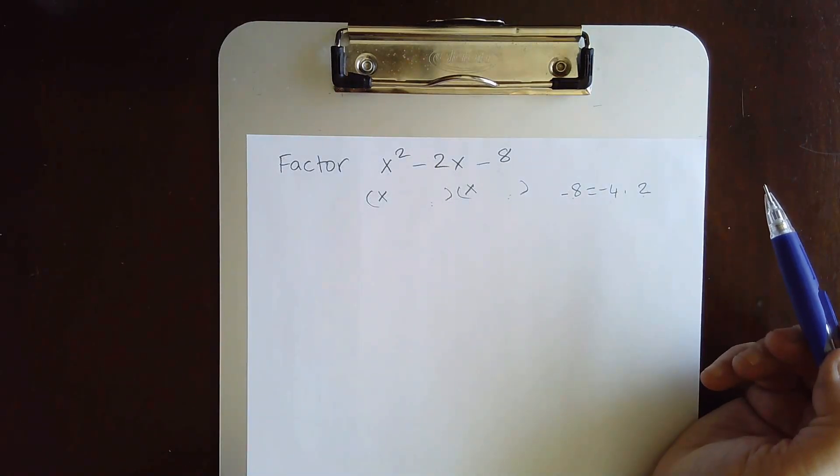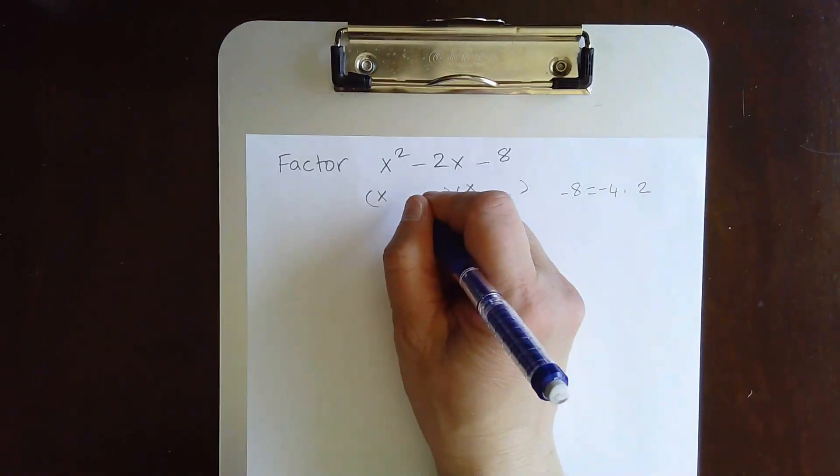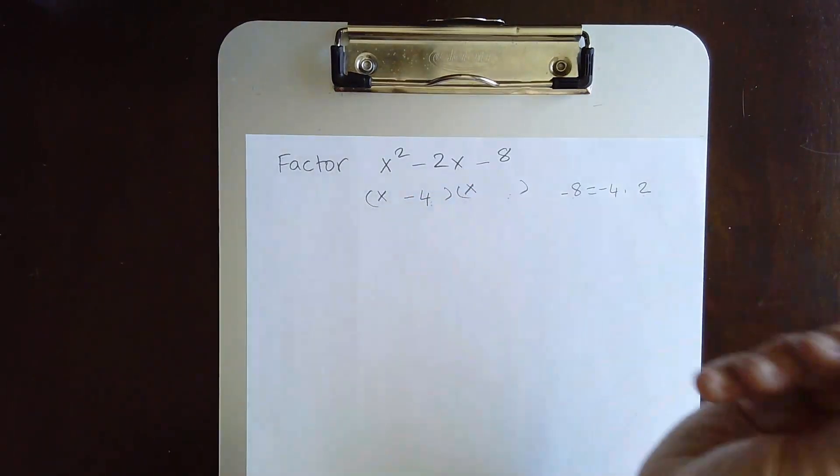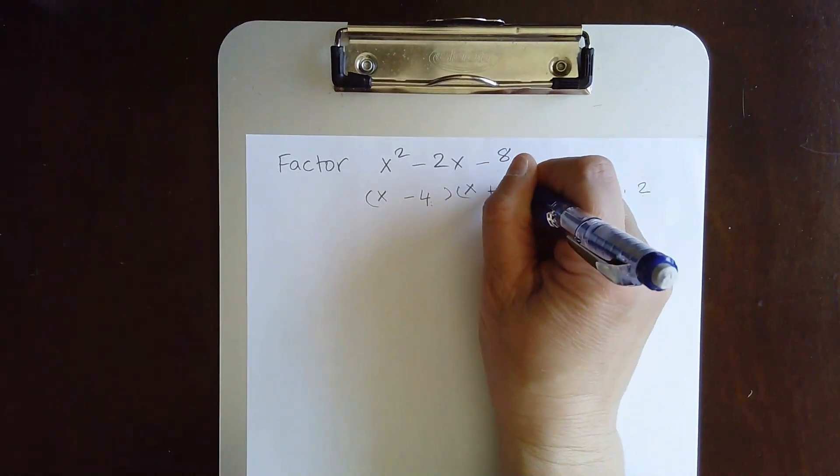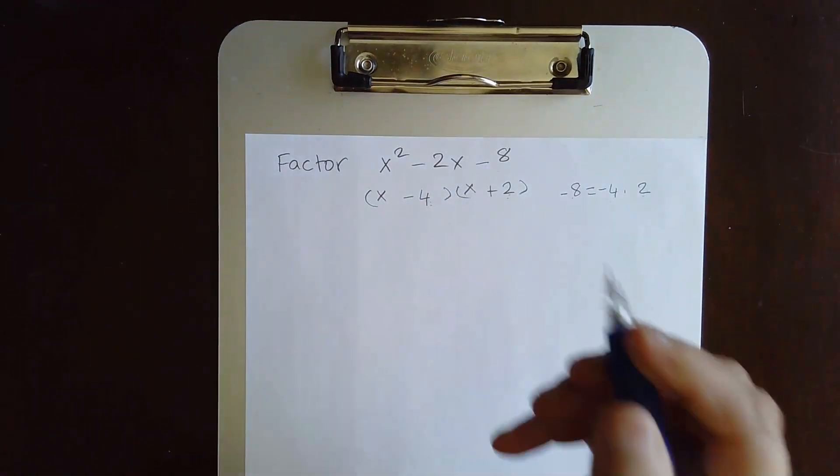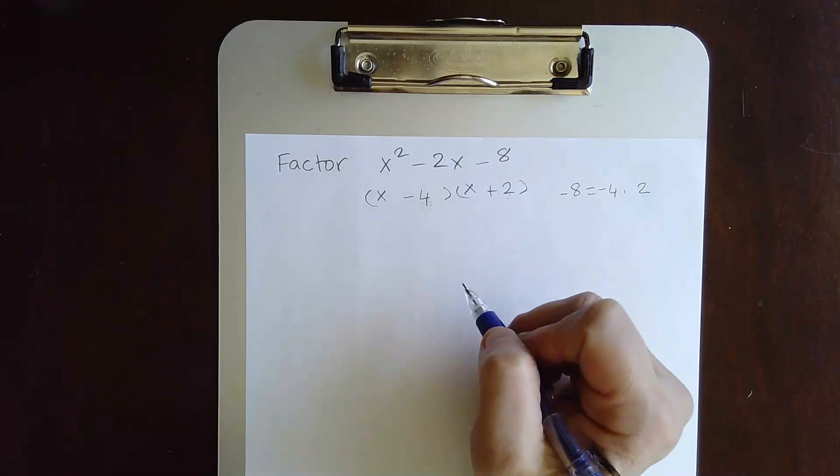Okay, so these are the two numbers right here. So I have to have negative 4 here and positive 2 here. You can check it easily by doing FOIL.